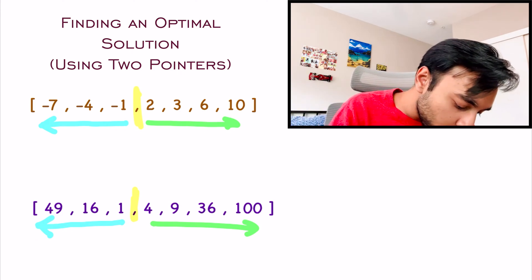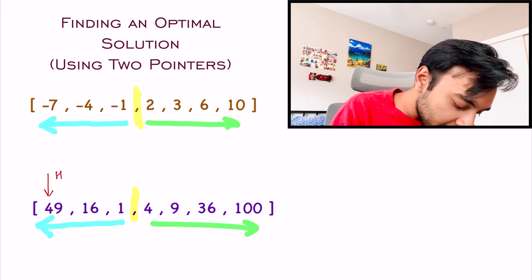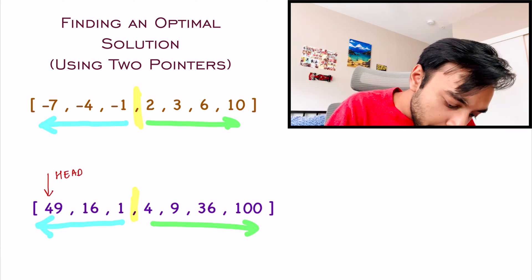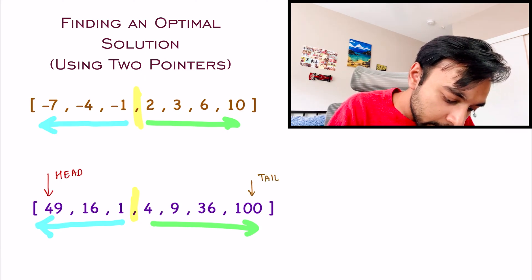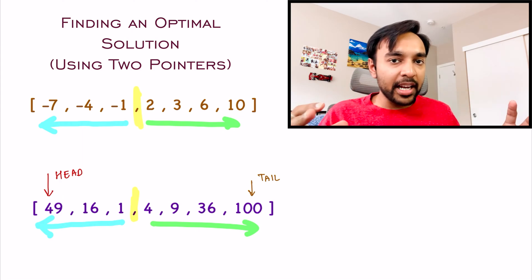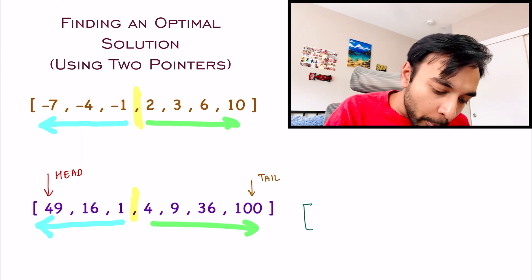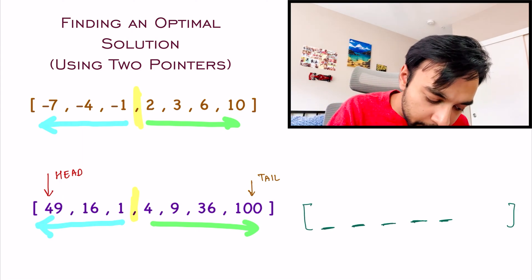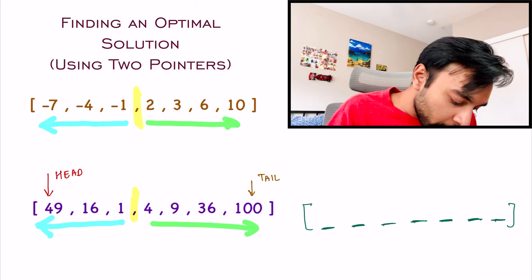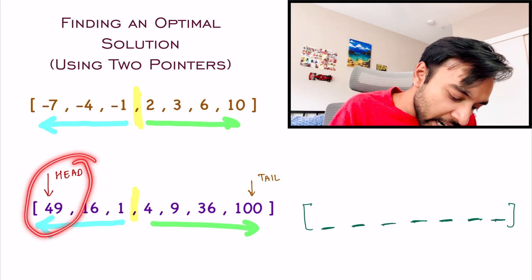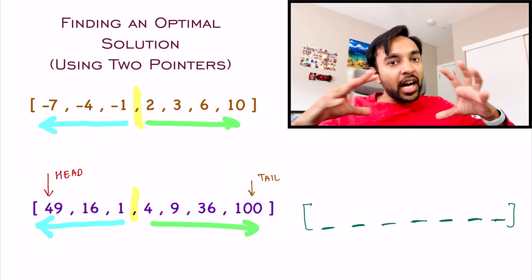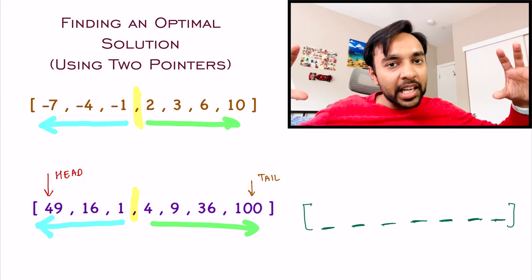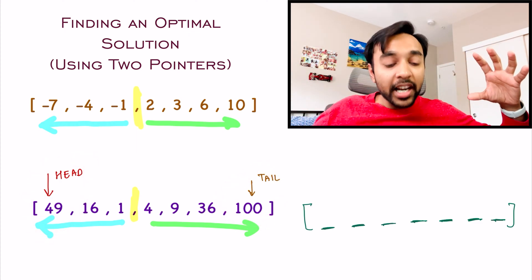What I am gonna do is, I will have two pointers, one that starts at the head, and the other pointer that starts at the tail. And, using these head and tail pointers, I can start to populate my final array. To populate this array, what I am gonna do is, I will compare the head and the tail, because I know that the most extreme elements will be on both of these ends.